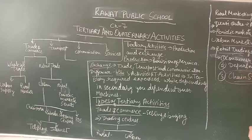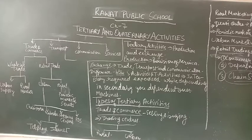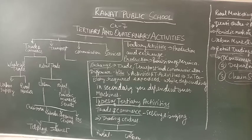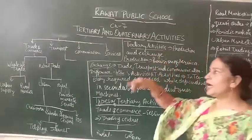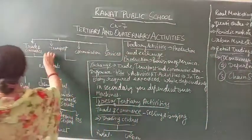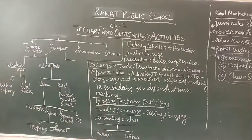Next are chain stores. If a product or brand becomes famous by name, many stores with the same brand open in different places — those are chain stores. For example, pizza or burger brands with different quality levels all have their own chain stores. This is all about trade and commerce. In the next class, we will study transport and communications. Thank you.